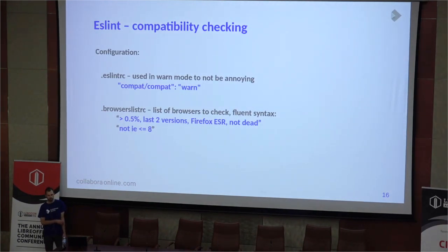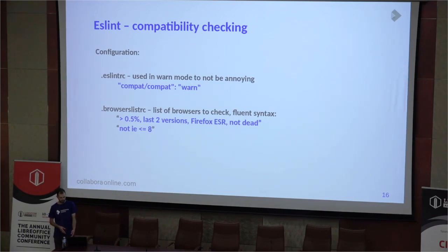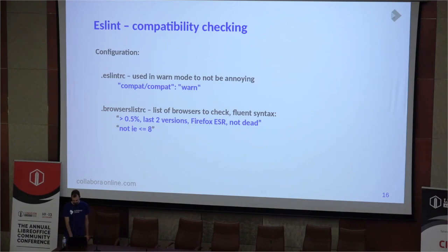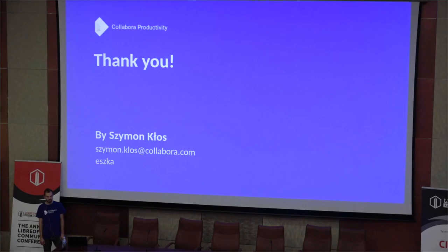The configuration is really powerful because in .browserslistrc we can specify not only one version of, for example, Firefox and Chrome, but we can put something like the last two versions of each browser, and not a certain browser. I think it's a very good feature. I want to merge this soon. And that's everything I prepared — any questions? Thank you.